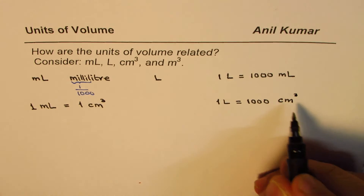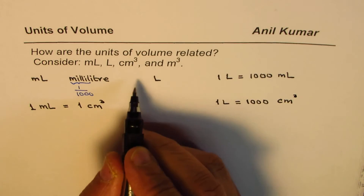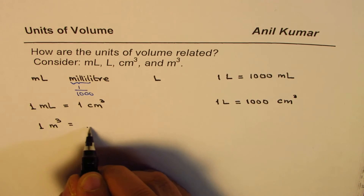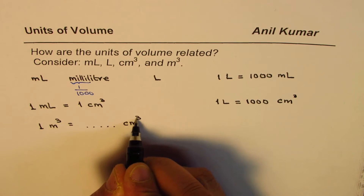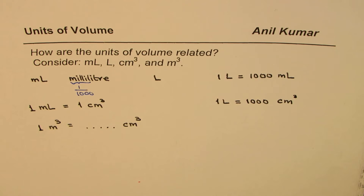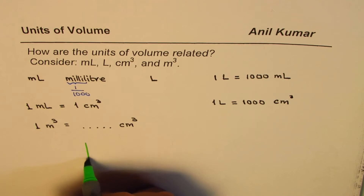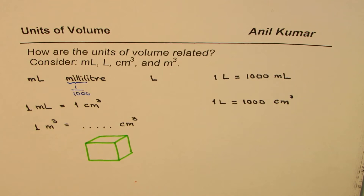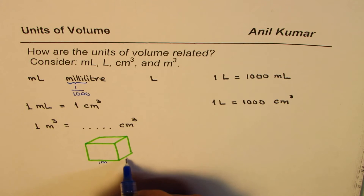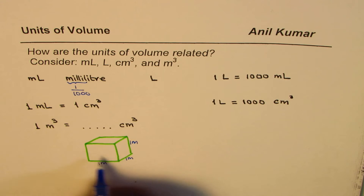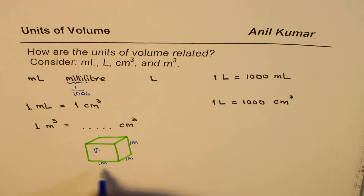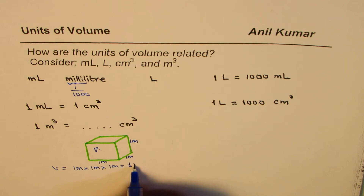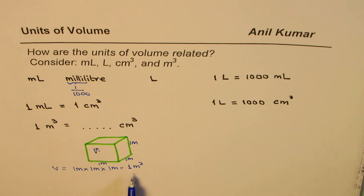Now the big question is how are centimeter cube and meter cube related? We need to find the relation: one meter cube equals how many centimeter cubes? This is indeed very tricky. We can consider a cube whose sides are one meter each. The volume of this cube is one meter times one meter times one meter, which is one meter cube.